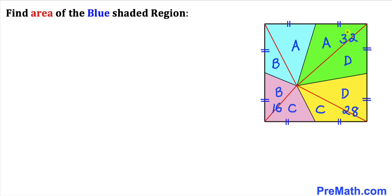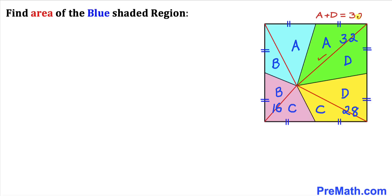Now we know that the area for this green region is 32, and this is going to be equal to the sum of these two individual areas A and D. So therefore for this green region I can write A plus D equals 32. Now let's focus on this yellow region. We know the area for this yellow region is 28, and this yellow region is the sum of these two individual areas C and D.